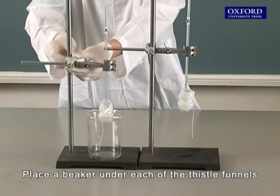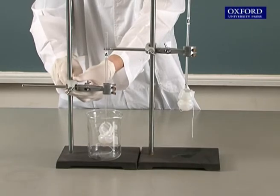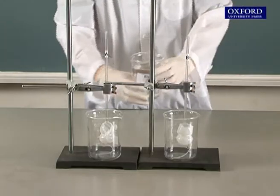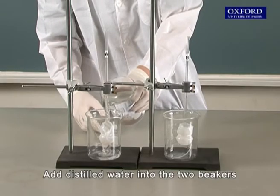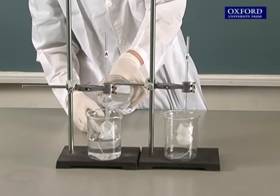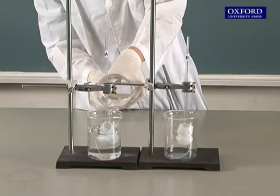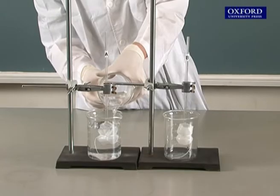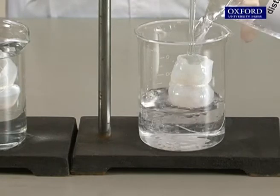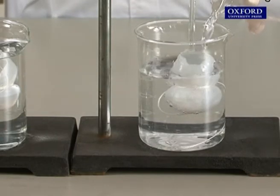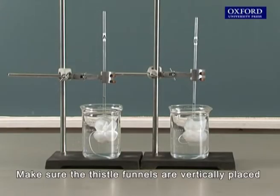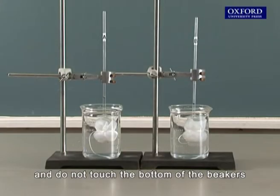Place a beaker under each of the thistle funnels. Add distilled water into the two beakers until the bulbs of the thistle funnels are completely covered. Make sure the thistle funnels are vertically placed and do not touch the bottom of the beakers.